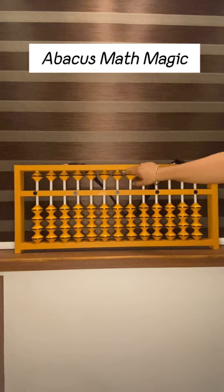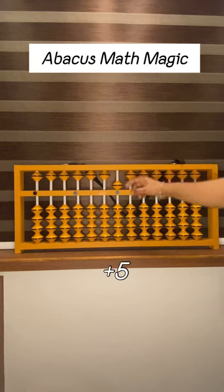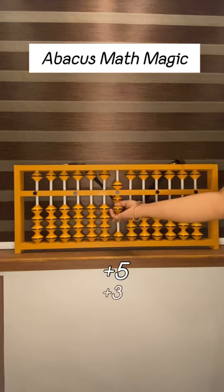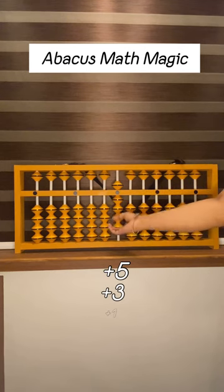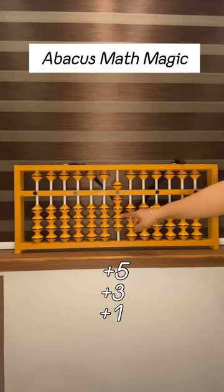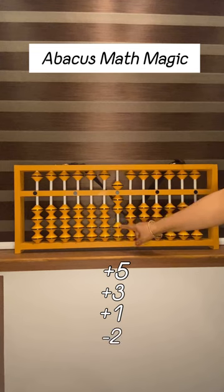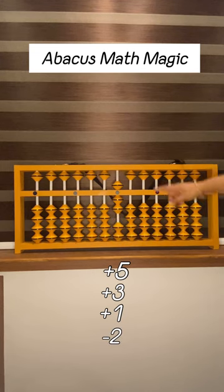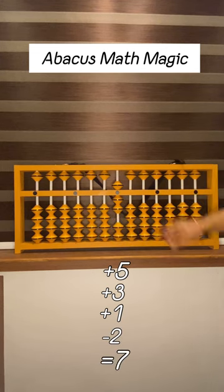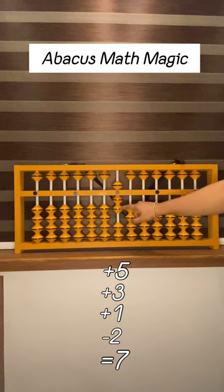One, 5, 3 beads together. Three, 1. Subtract 2. Now what is the value? 7. Five, 6, 7.